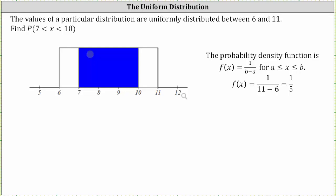The minimum value of the random variable x is six, shown here on the left. We often refer to the minimum as a. The maximum value of the random variable x is 11, shown here on the right, which we often refer to as b.